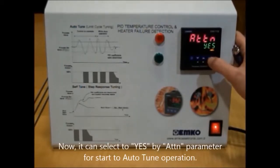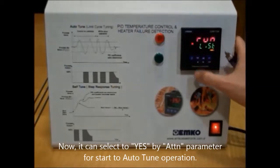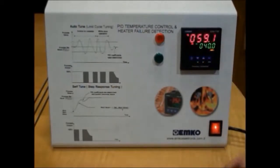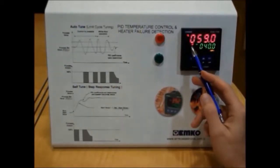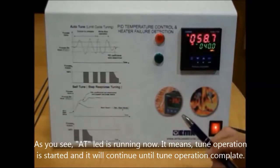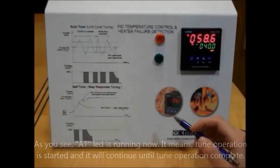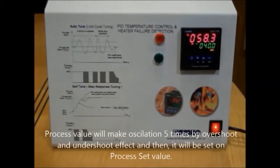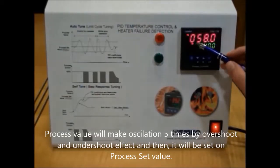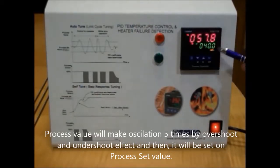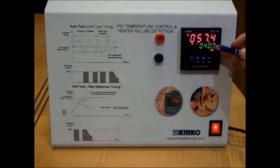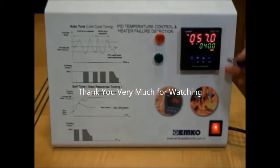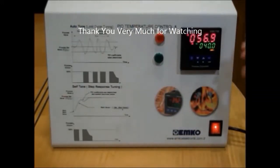Then, select yes. And now, as you see, AT lights running now. It will run until completed Auto-tune. Our process volume will be changed always, it will be powershoot and undershoot then process set value and then it will be on the set value.